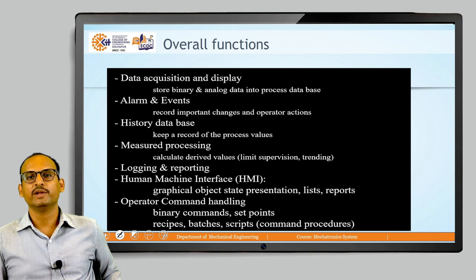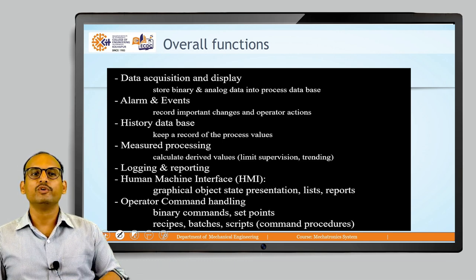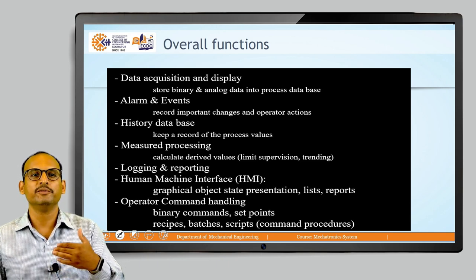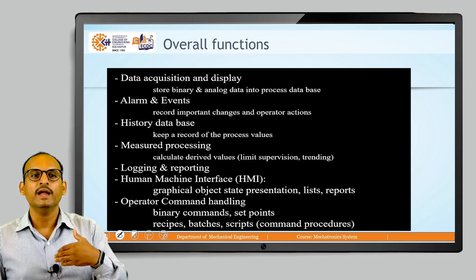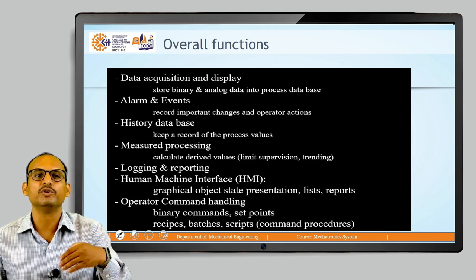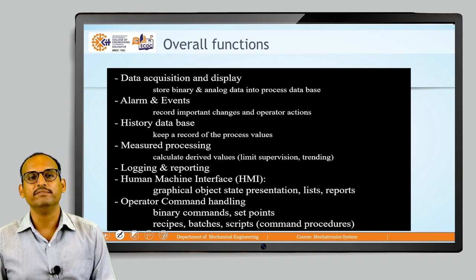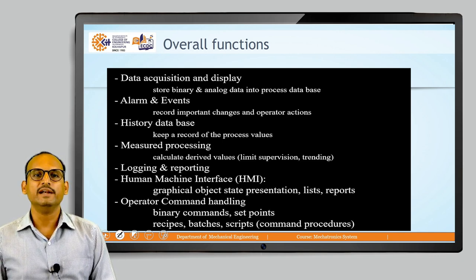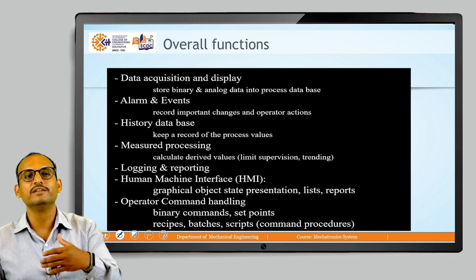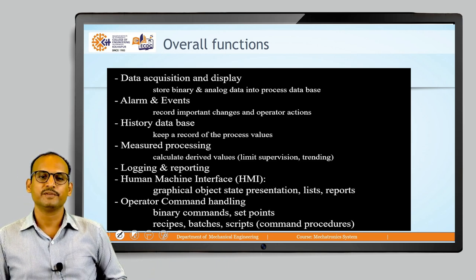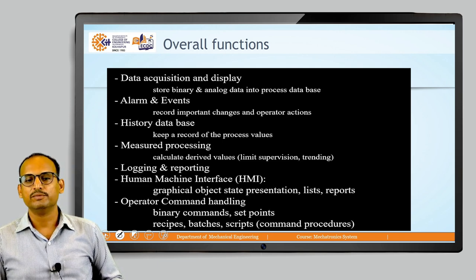Human Machine Interface is another important benefit — in the control room there is an interface where humans can interact with machines, give information, and give instructions. Those instructions are passed on to address the problem in the field. Operator command handling allows binary commands, set points, recipes, batches, or scripts, so you can control any process directly from the control room.